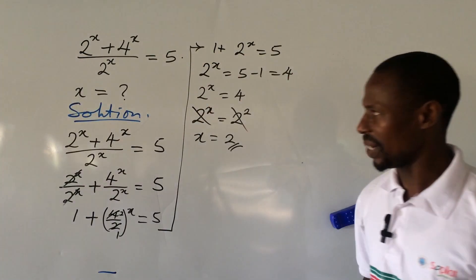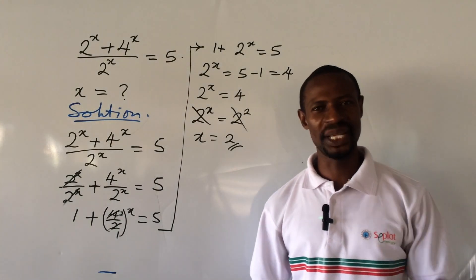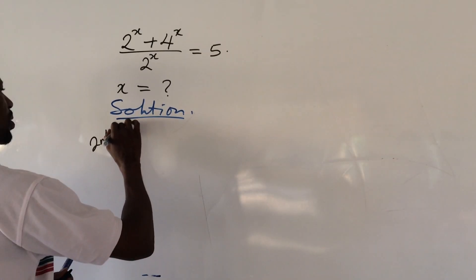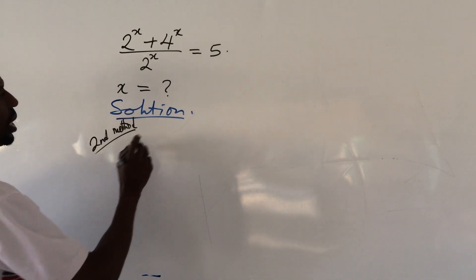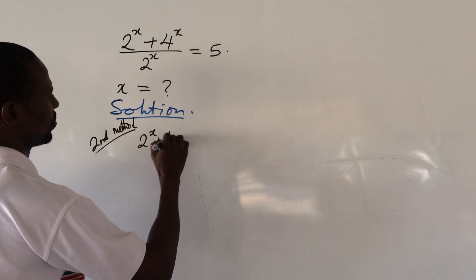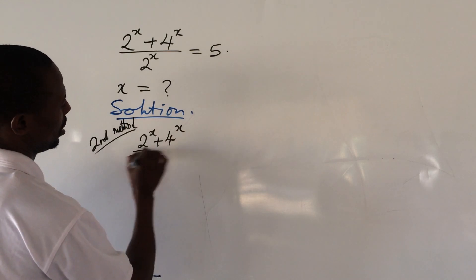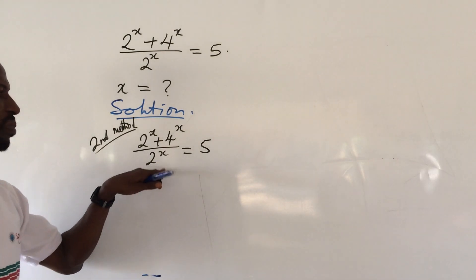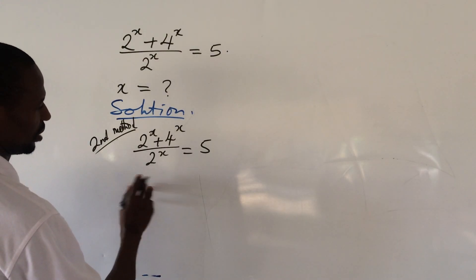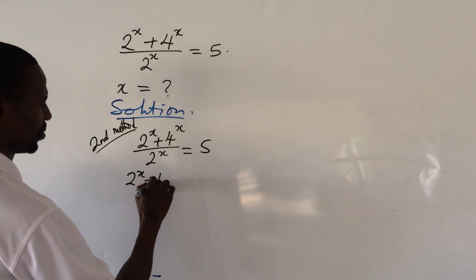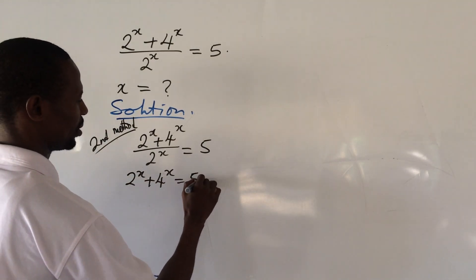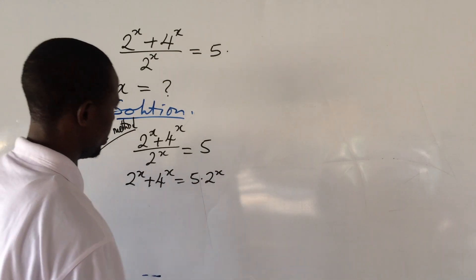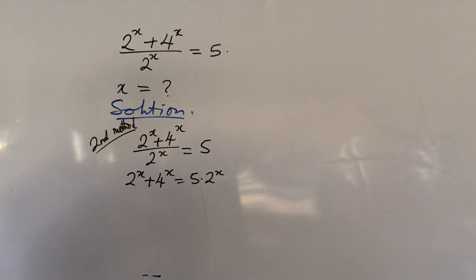Now let's look at the second method. We put down our equation: (2^x + 4^x) / 2^x = 5. We eliminate the denominator by multiplying through by 2^x, giving us 2^x + 4^x = 5 · 2^x.